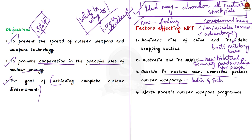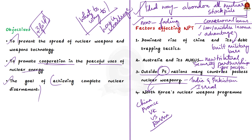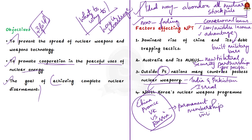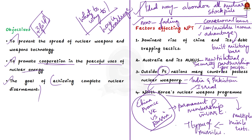The P5 countries — China, France, Russia, the UK, and US — hold permanent membership in the UN Security Council and all possess nuclear weapons. The fourth case is North Korea, which has a nuclear weapons program; its actual possession is still debated. In recent times, North Korea conducted multiple missile tests, possessing seven major types of long-range missiles ranging from 1,500 km to 13,000 km.